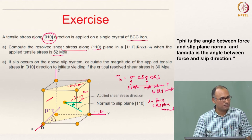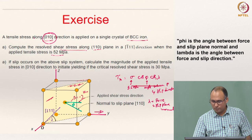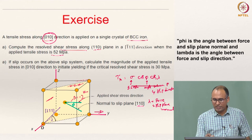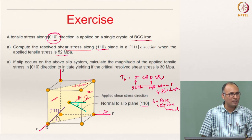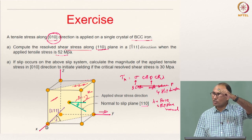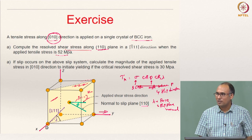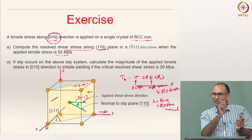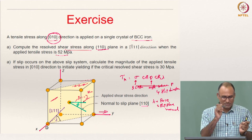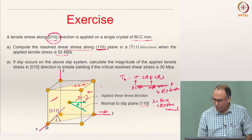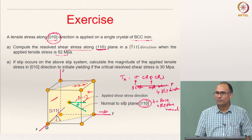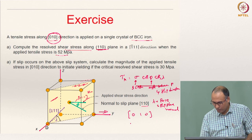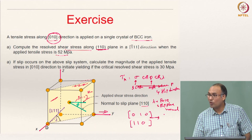The force is acting in the [010] direction. The normal to the slip plane (110) is in the [110] direction, since in a cubic crystal the normal to a plane has the same indices as the plane. So you need to find the angle between [010] and [110] to get phi, using elementary vector algebra. The angle between [010] and [1̄11] gives lambda.